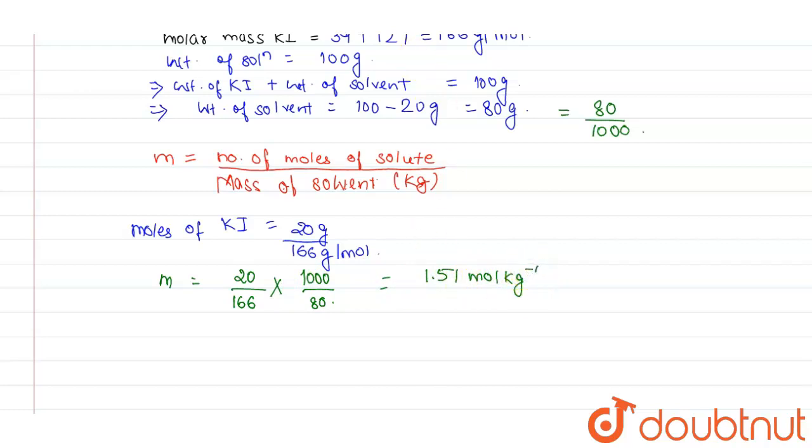We have to now round it to 1 place of decimal, so it comes 1.5 mol per kg. We have done rounding off here, so now we have to multiply it by 10, so 1.5 into 10, the value comes out to be 15 mol per kg. Thank you.